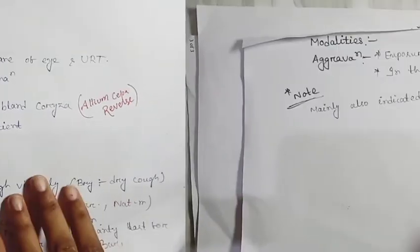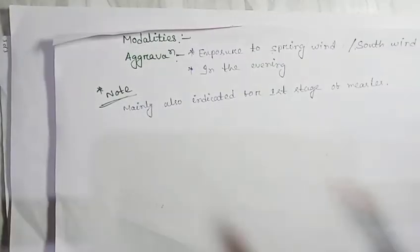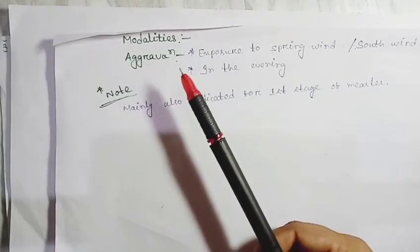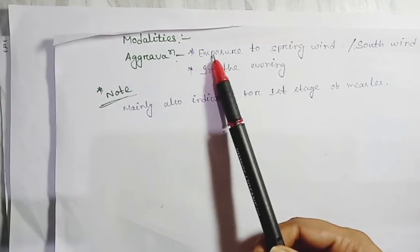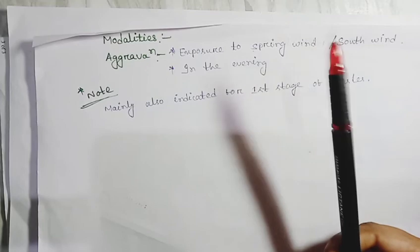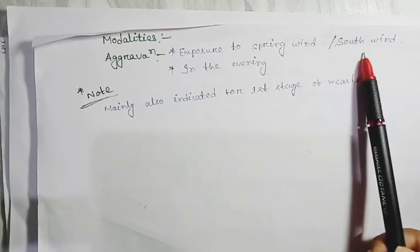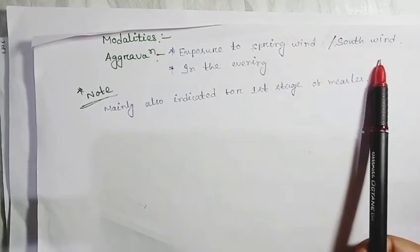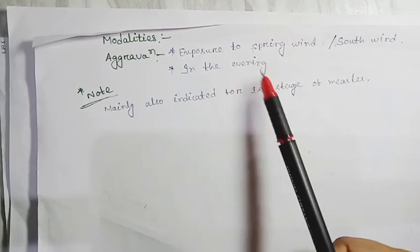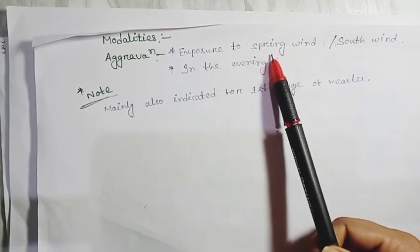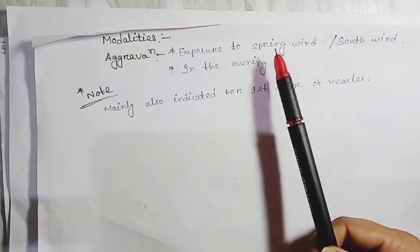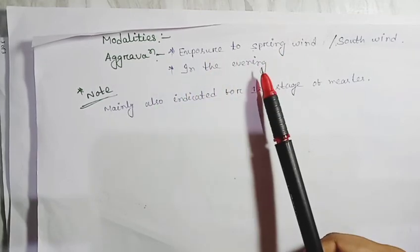Modalities: aggravation occurs by exposure to wind. They are chilly patients, so they cannot stay in cold or wind - whether spring wind or south wind. In the evening, there is much aggravation with lacrimation and violent coughing. Aggravation commonly occurs at evening time.